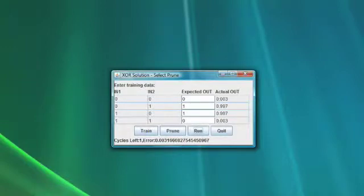You can see the outputs. It is correctly identifying the XOR data. The actual outs for the middle two are nearly one. The other actual outs are zero.